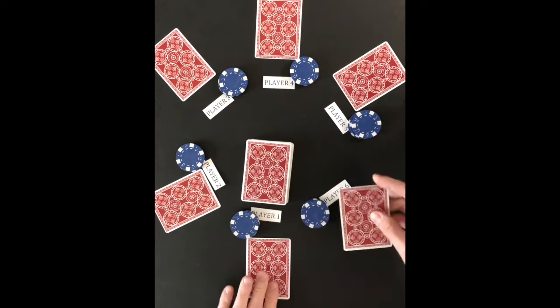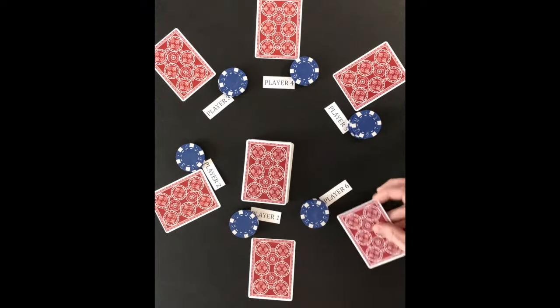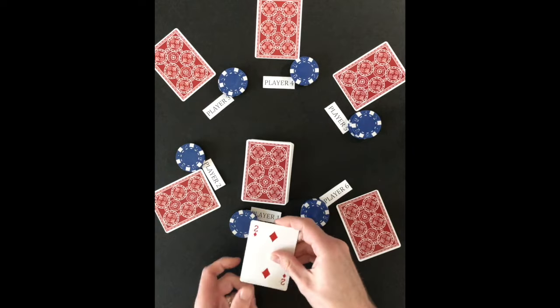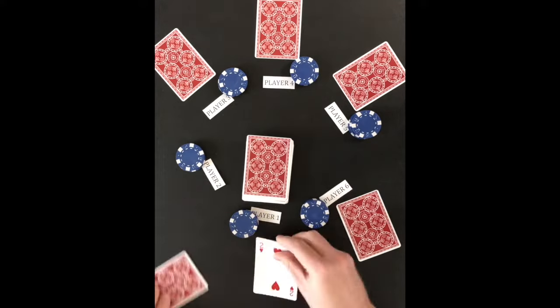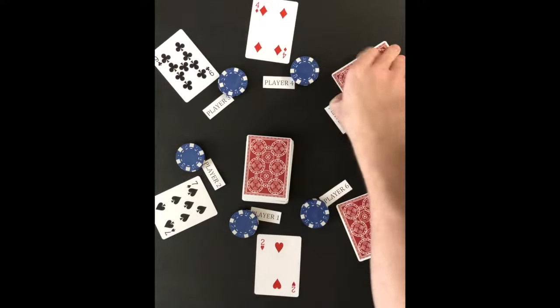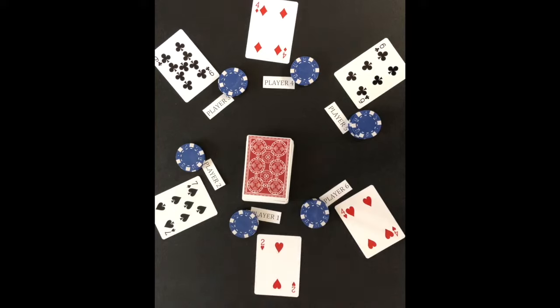Play moves to player six who exchanges his two with player one. Player one sees the two and decides to exchange it. The dealer for the round makes an exchange with the top card of the remaining deck. After the last exchange, each player shows their card. Player one has the lowest ranking card and loses one of his tokens to the middle.